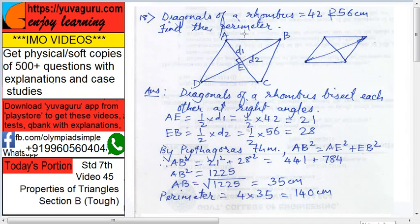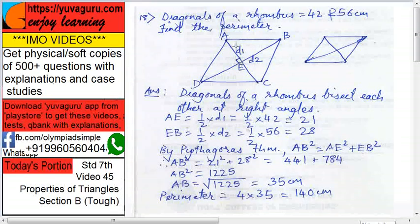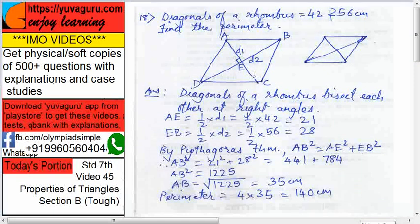Right, now we have to find the perimeter here. Diagonals of a rhombus bisect each other at right angles, so AE equals half into d1. This full length is 42, so half into 42, that is 21. Similarly, EB equals half into d2. This is full 56, so half into 56, that is 28.